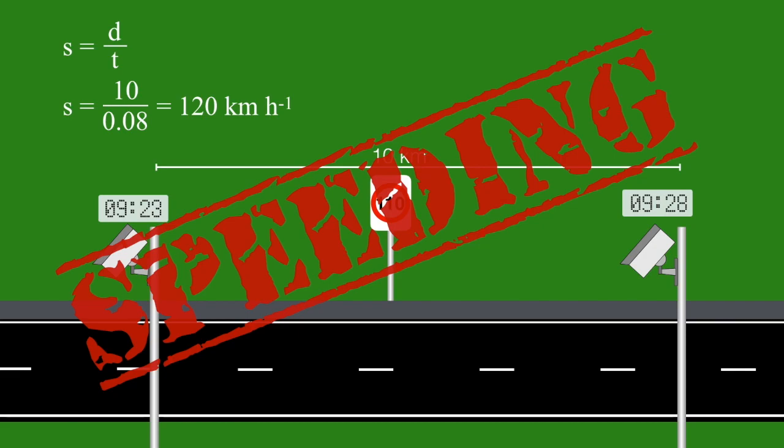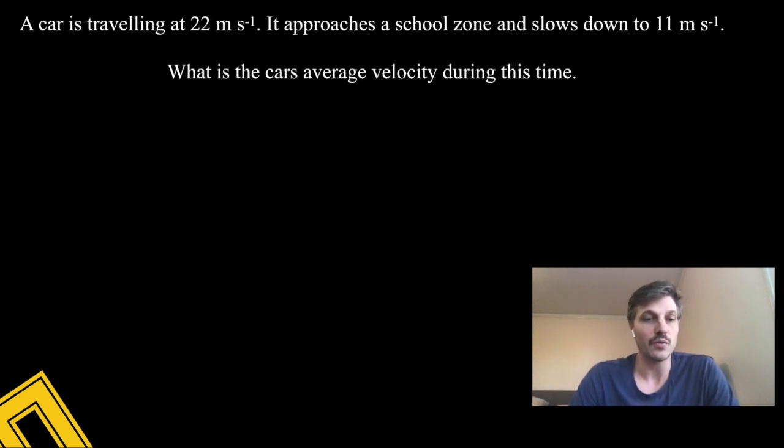Of course, a driver could speed at 300 km/h and then stop just before the second camera and wait to extend the time, but that's pointless because most people speed to get somewhere faster, and that won't help.